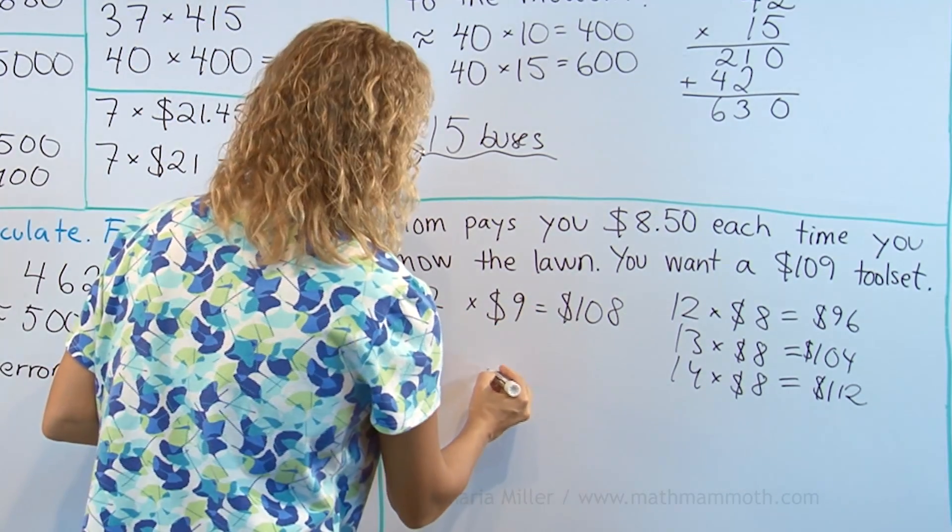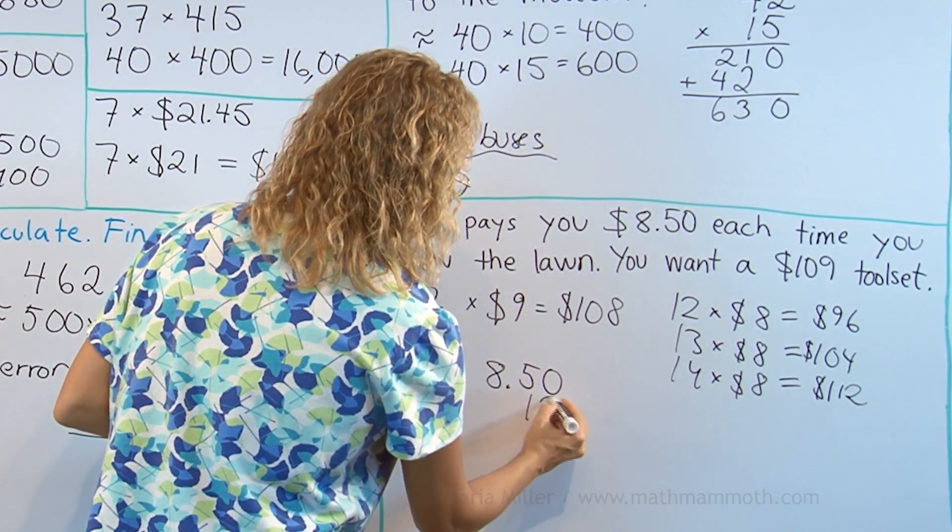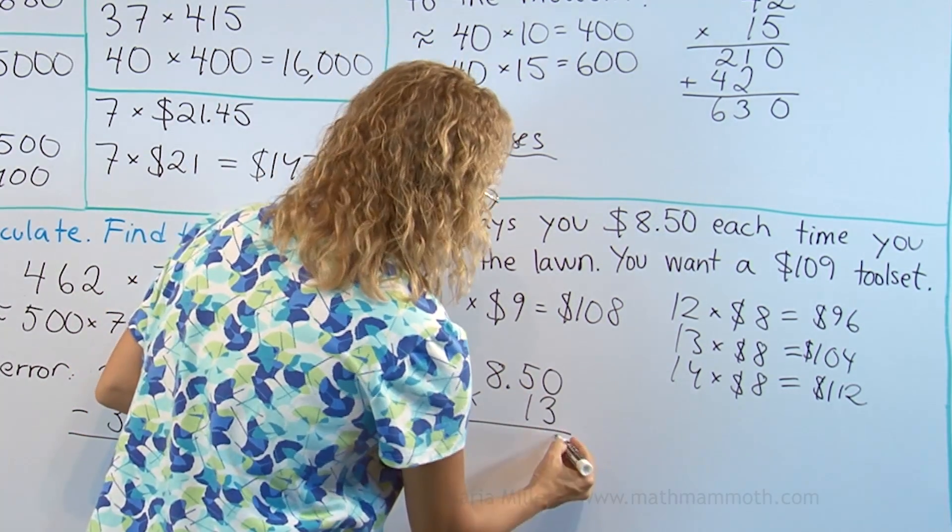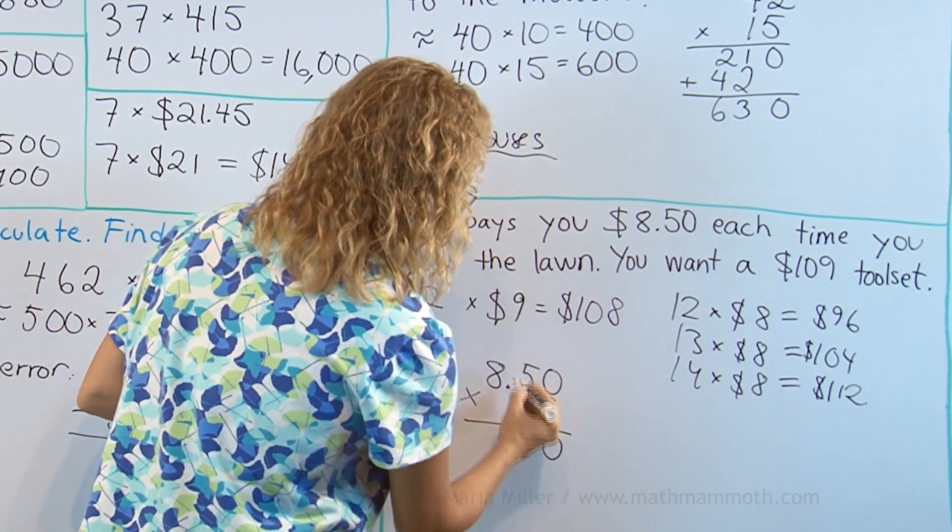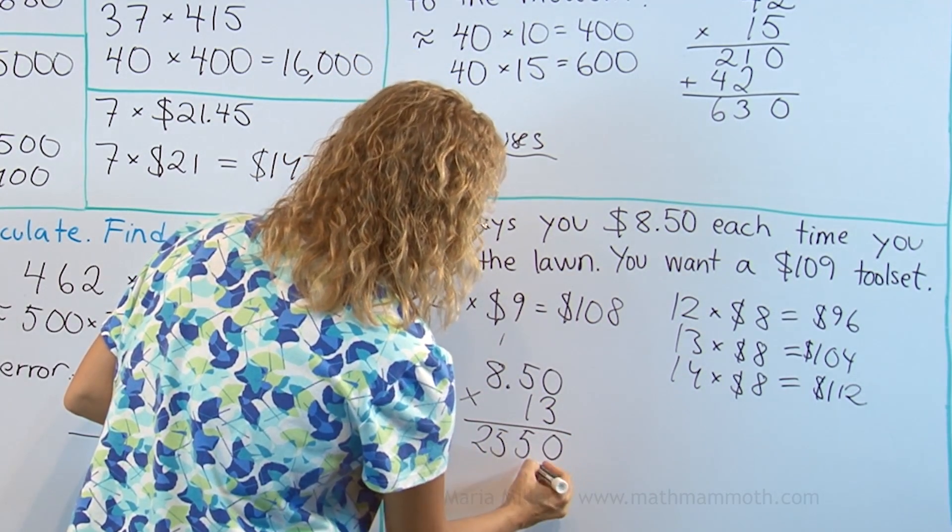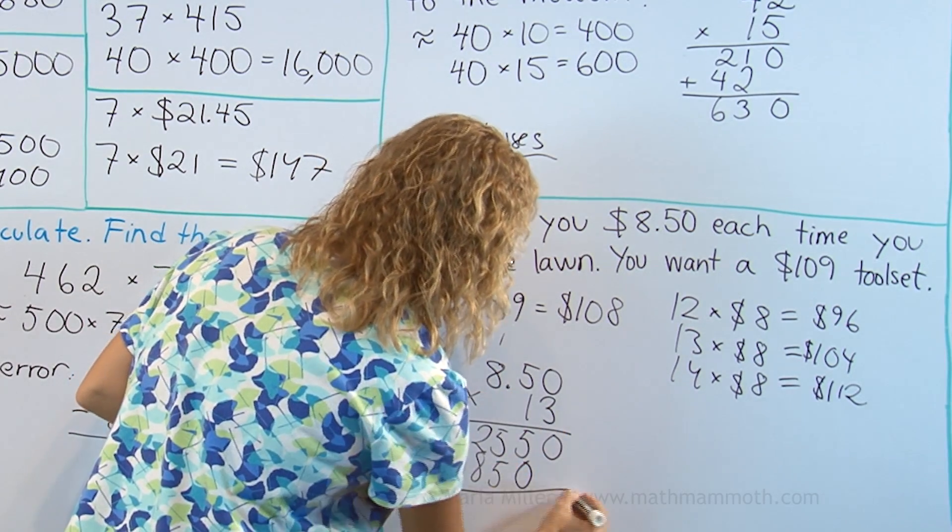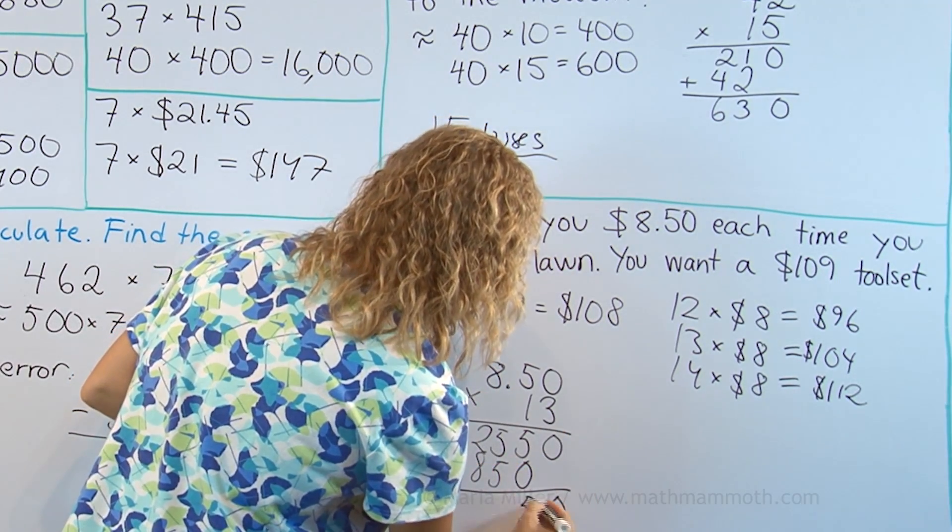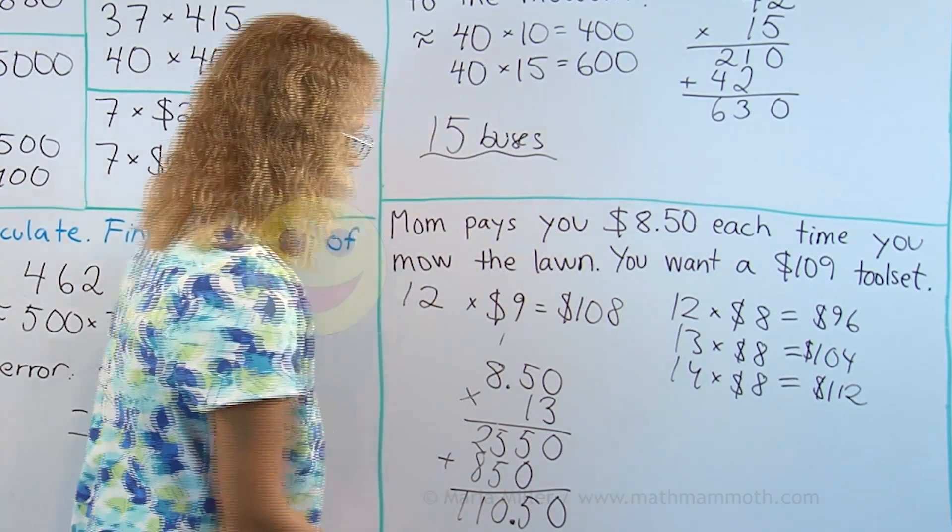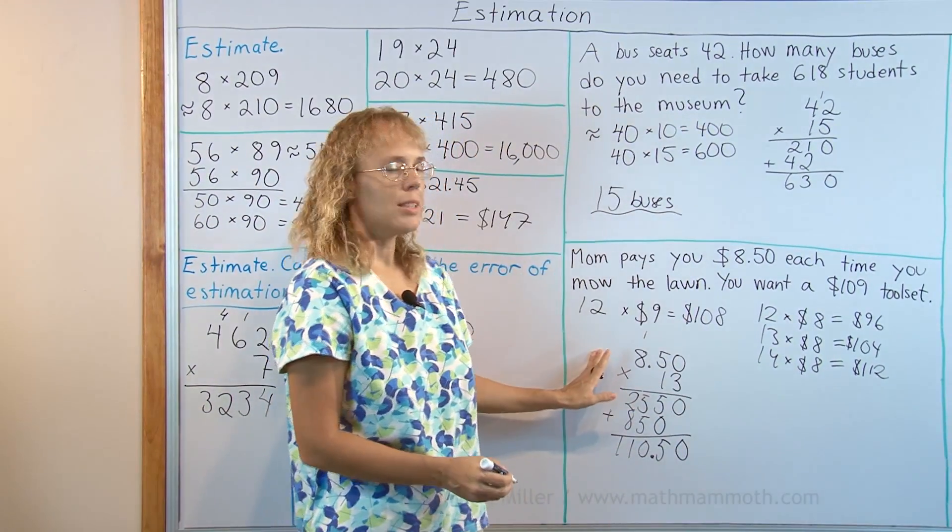And now we will just check to make sure by multiplying this by 13. 3 times 0, 3 times 5, 15, and then 24, 25. Then 1 times 0, 1 times 5, and 1 times 8. Add. And here's my decimal point. 150. Yes, that is enough. So 13 times is enough.